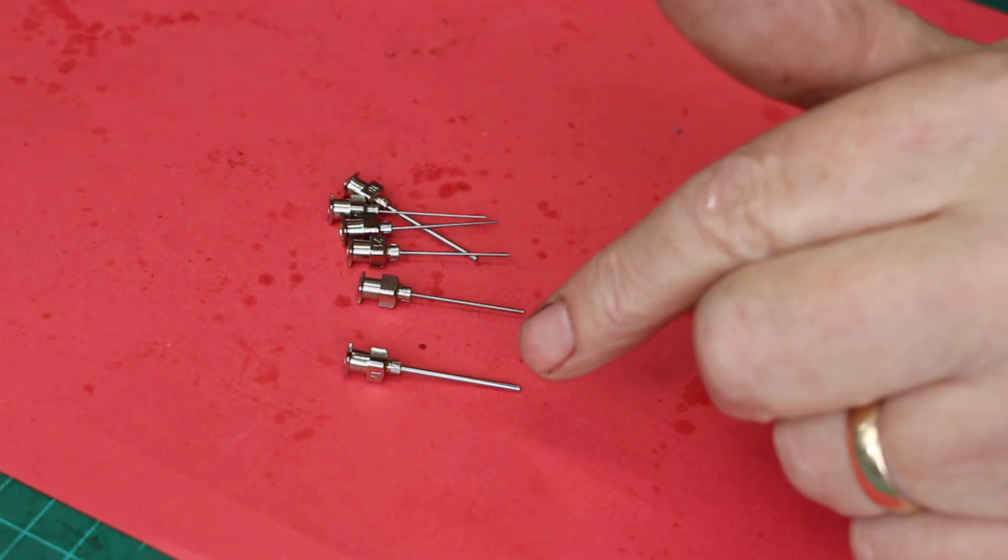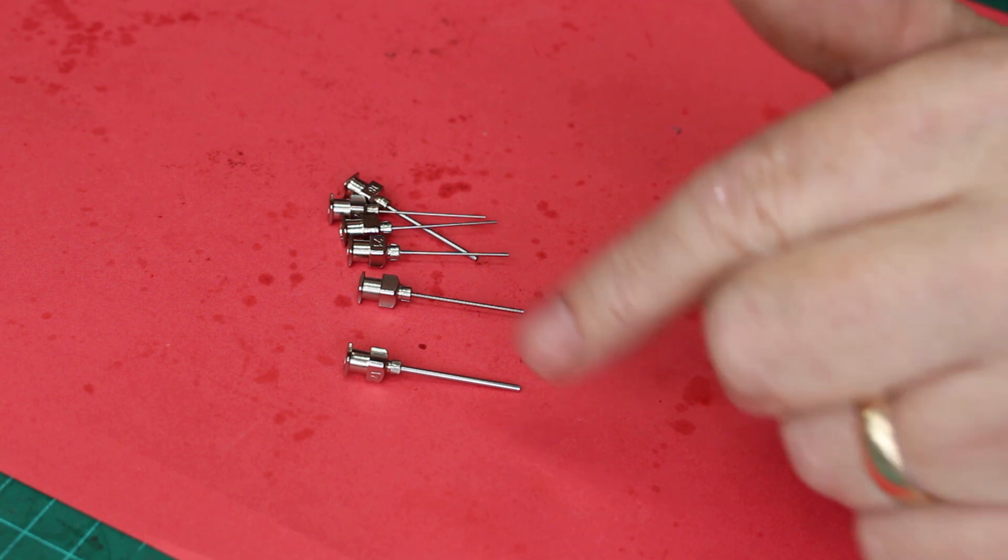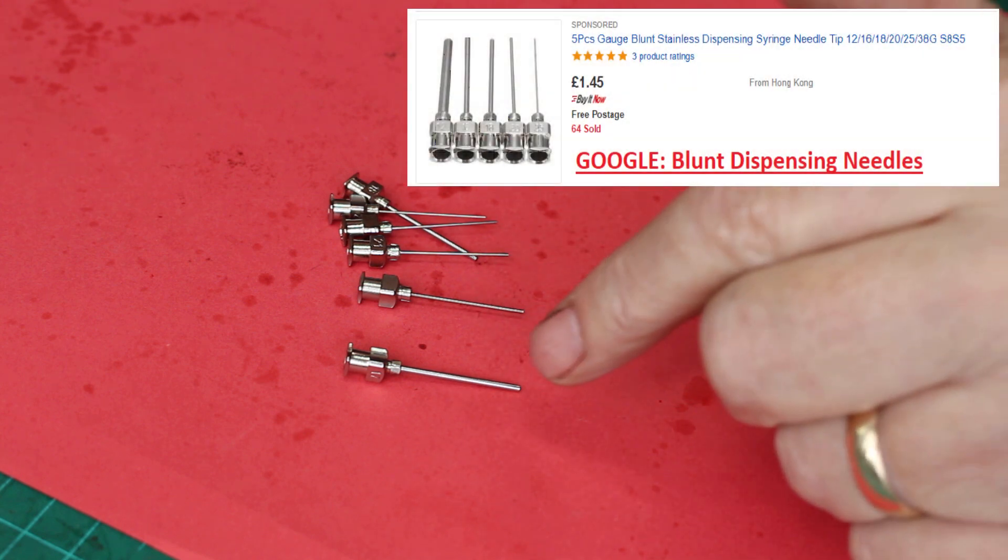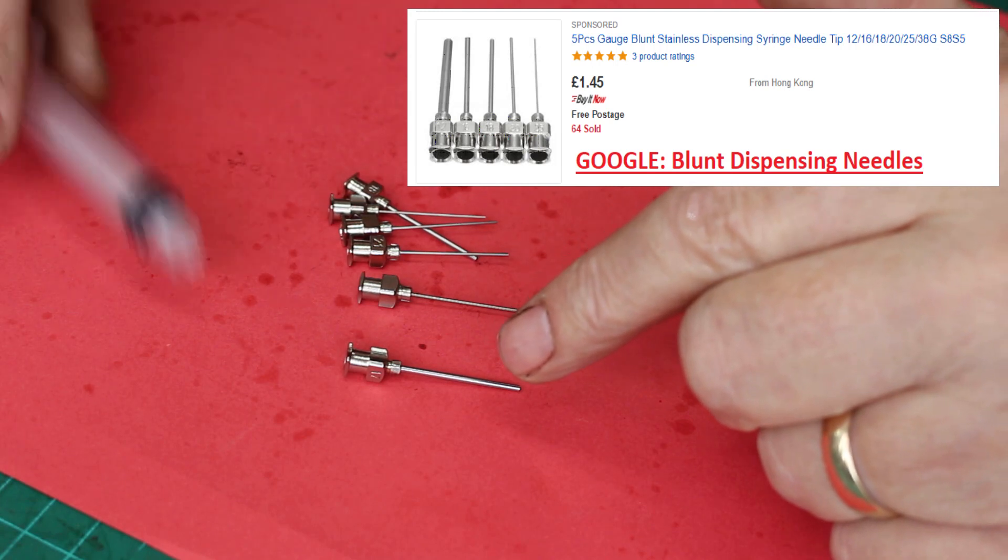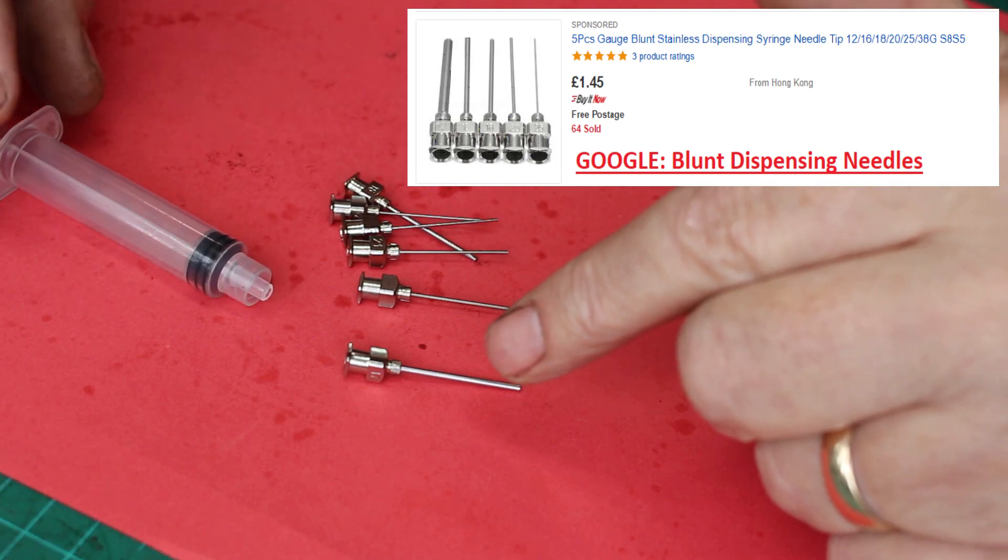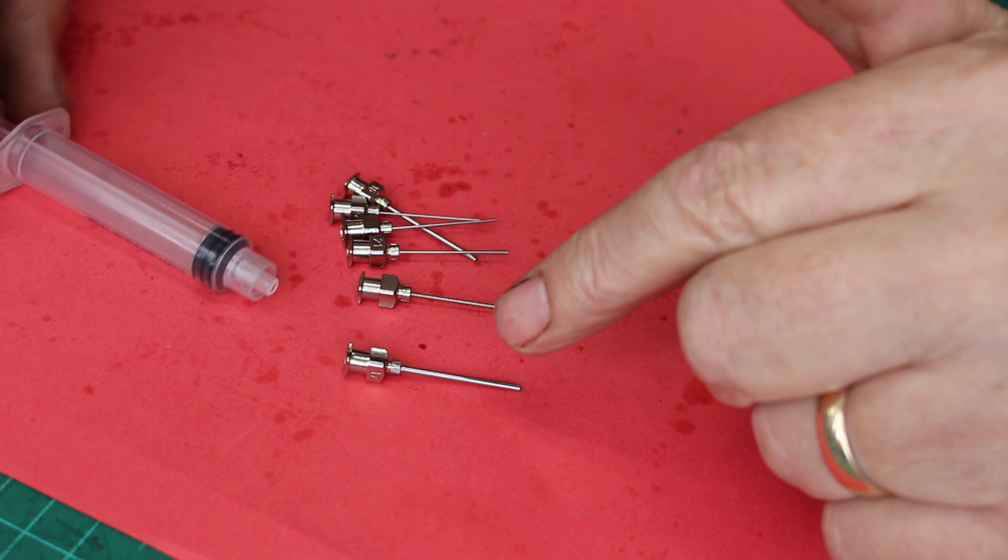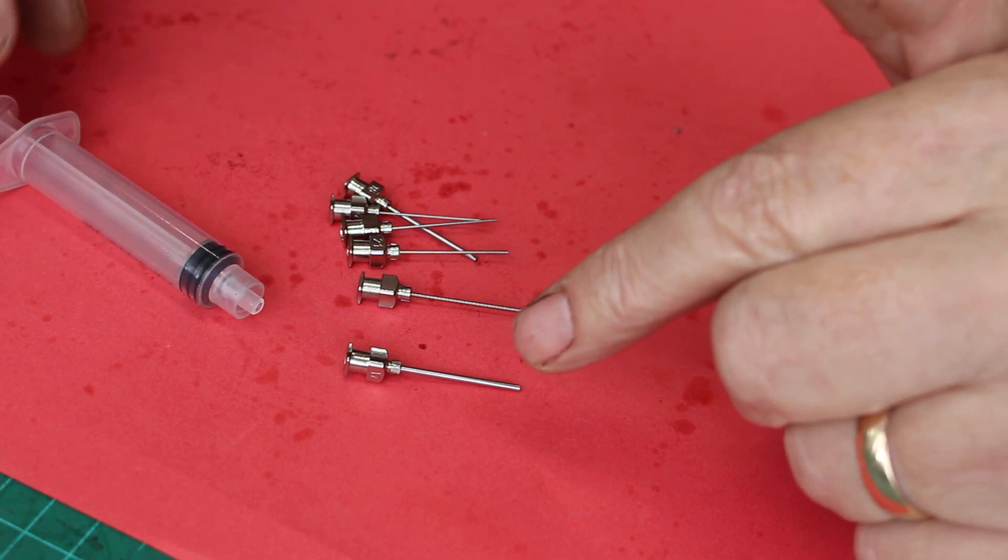I bought these what I described as blunt needles off an auction site on the internet, very cheap. They're used with a syringe and I believe they're used to dispense inks and glues in measured quantities, that kind of thing.